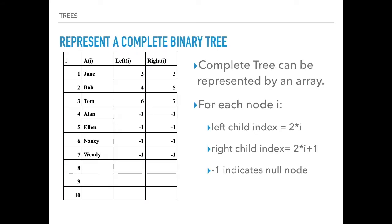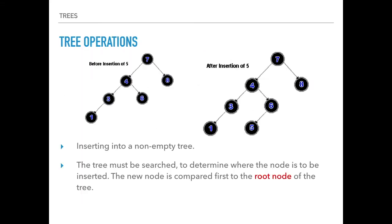A complete binary tree can also be represented as a table listing all nodes, with the left child at index 2^i and right child at index 2^i + 1; minus 1 indicates a null node. The most important BST operations to remember are: searching for a value, inserting a new value, and constructing a binary search tree from a list.